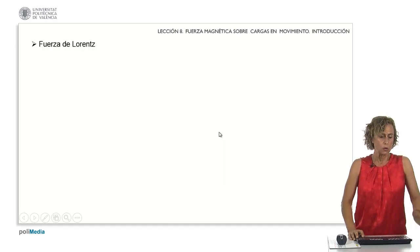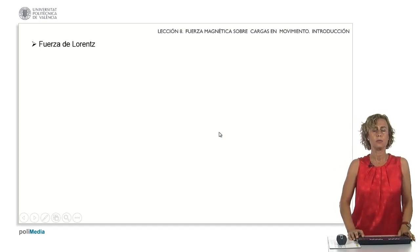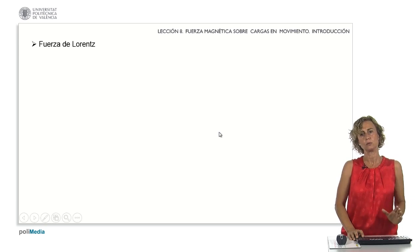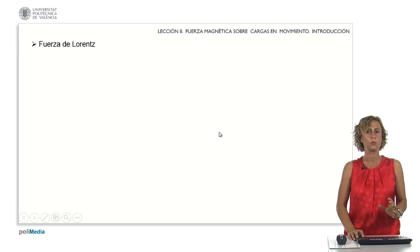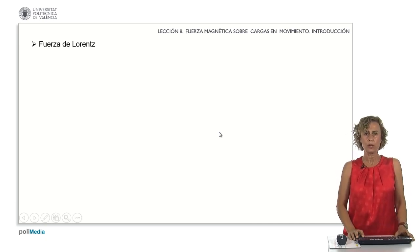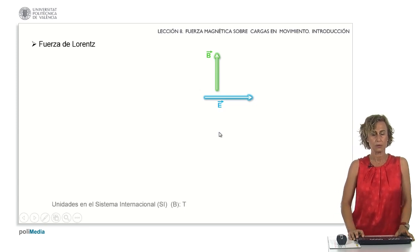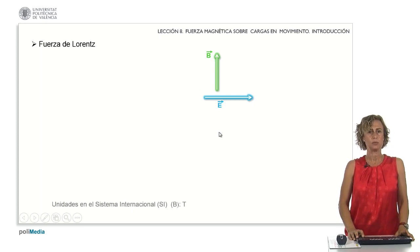When we explored the previous section on electrostatic fields, we observed that a charged particle within an electrostatic field was subject to a force. This time, we are going to introduce a new field — the magnetic field. We'll consider a region where both an electric field and a magnetic field exist, with direction and sense as depicted on the screens.